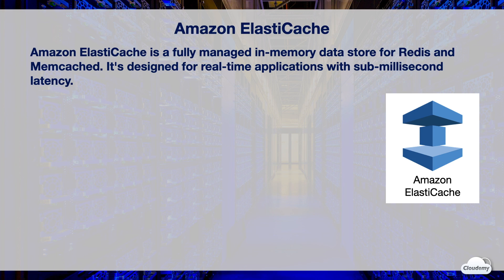Amazon ElastiCache is a fully managed in-memory datastore and cache service for Redis and Memcached. It's designed to power real-time applications with sub-millisecond latency. In-memory databases give you higher throughput and lower latency than disk-based databases. Applications that implement in-memory databases significantly reduce disk operations and improve overall performance.